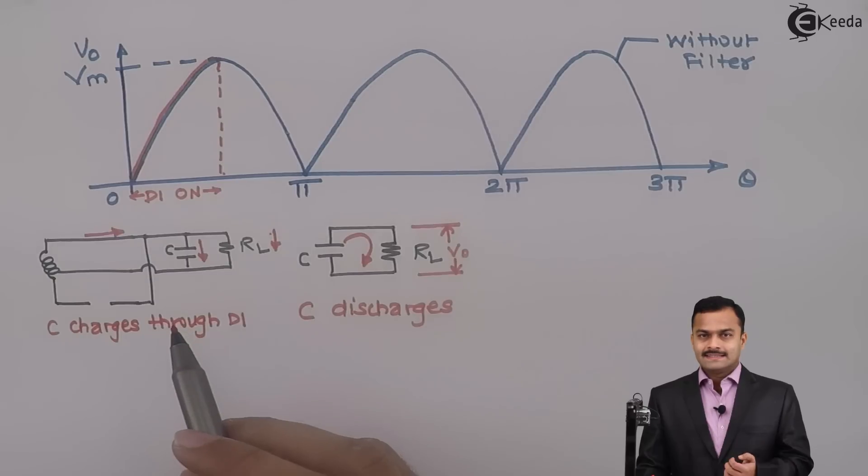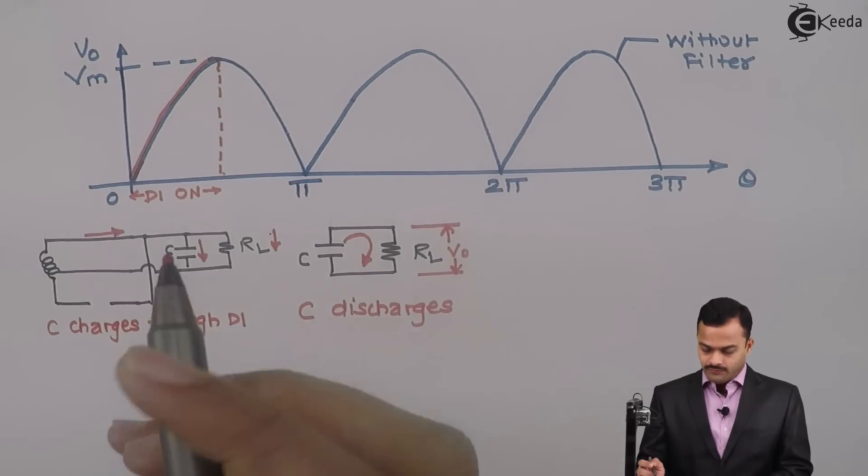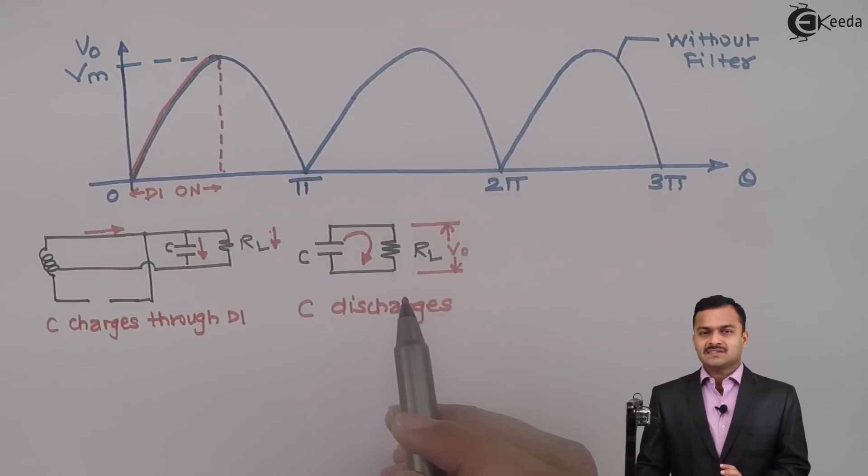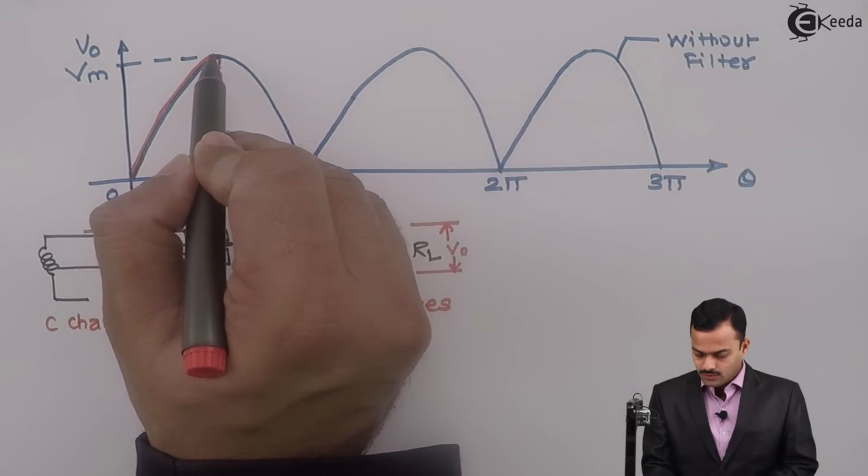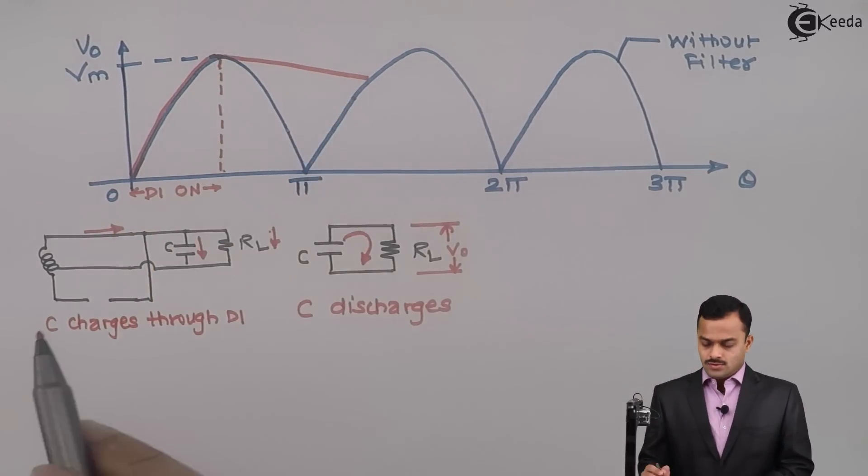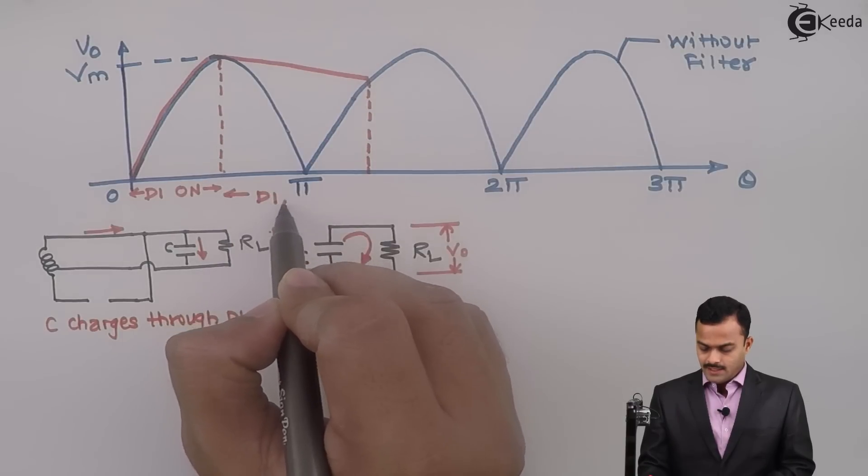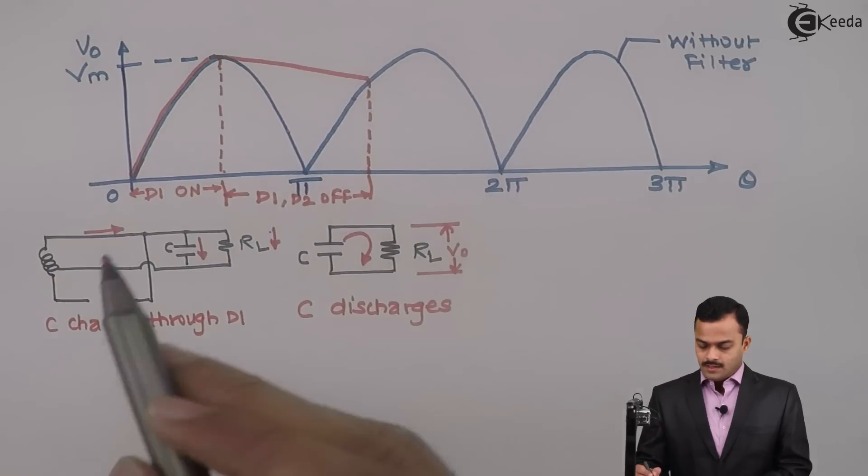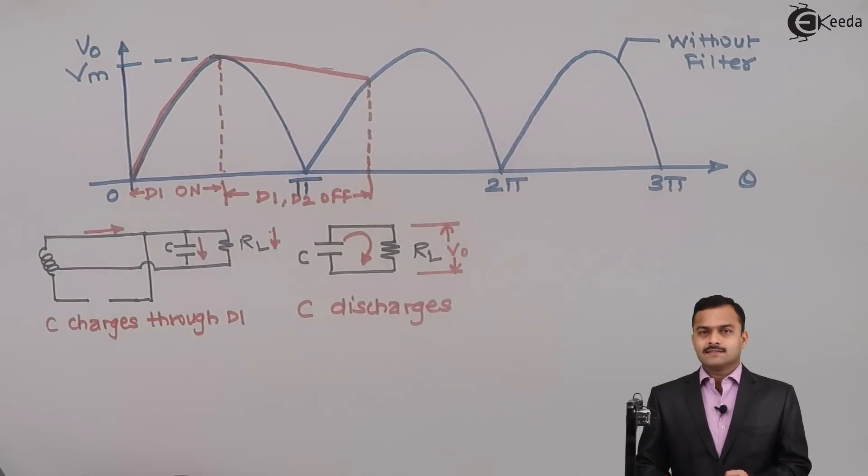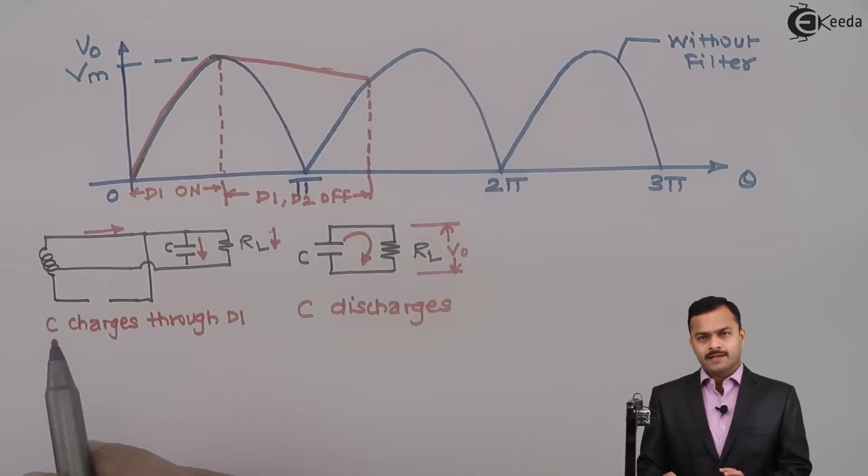This will continue till the next half cycle. The waveform will be like this. Discharge time for capacitor is very high, meaning it will discharge and its voltage keeps on decreasing slowly. During this time, both the diodes are off - D1 and D2 both are off. Till this point, capacitor voltage is more than the supply voltage as you can see from the graph. Therefore D2 remains reverse biased.